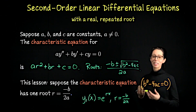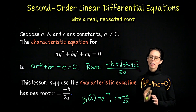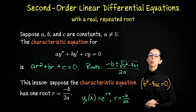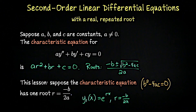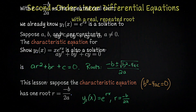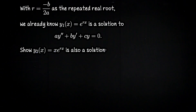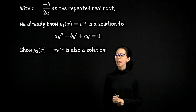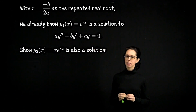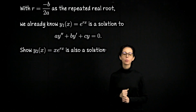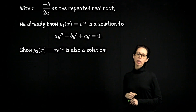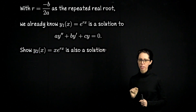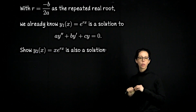We're going to give the form of the second solution without deriving it, but we will show that it works. The claim is that Y2(x) = x·e^(Rx), where R = −B/2A. It's not the same as e^(Rx) nor a constant multiple — we have this multiplying term x out front, and x is not a constant. Let's verify that this is a solution to the original differential equation by plugging it back in.